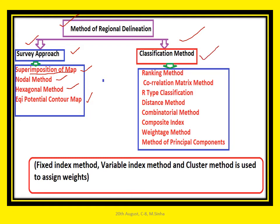The second major approach is the classification method, which is widely used for research purposes in recent times. First is the ranking method — on the basis of population criteria or vegetation density, we can rank any areas and formulate planning. Second is the correlation metric method — if there are two or more variables, the researcher or planner can correlate among the variables and delineate any region.